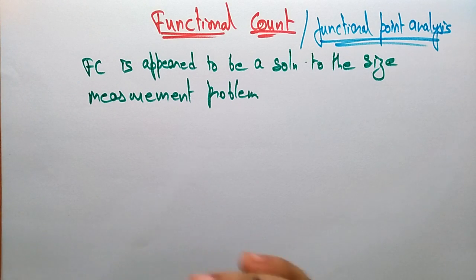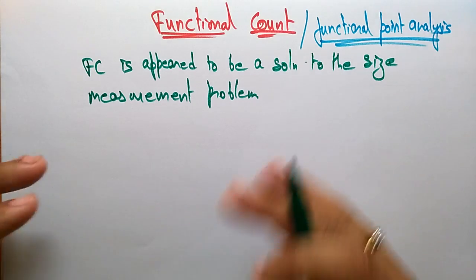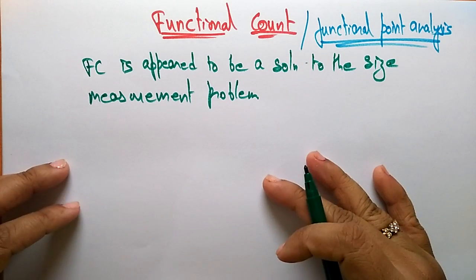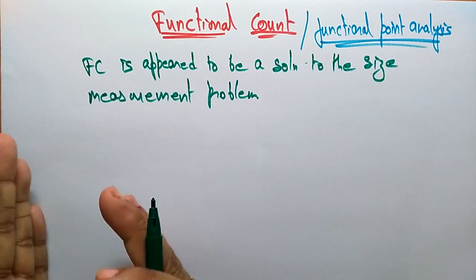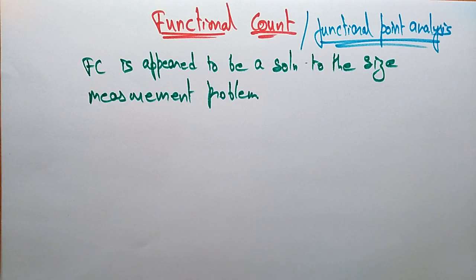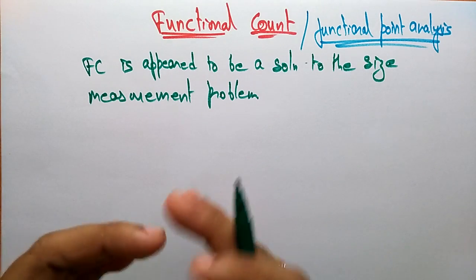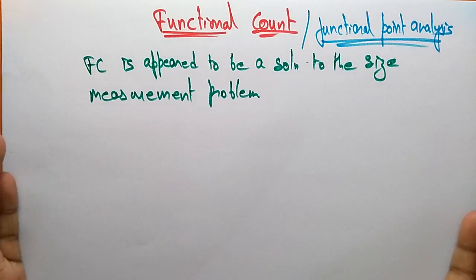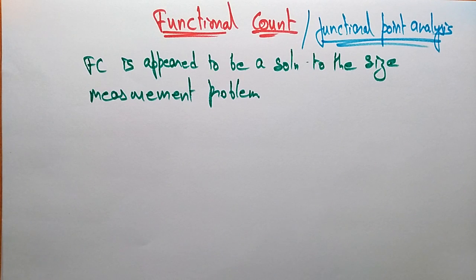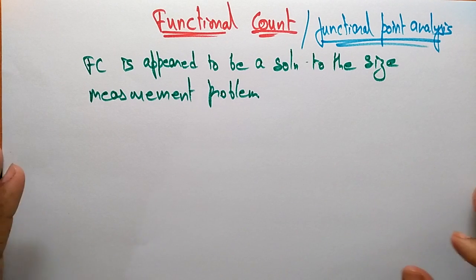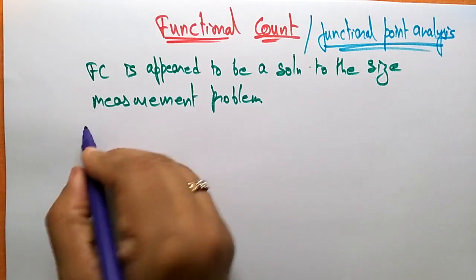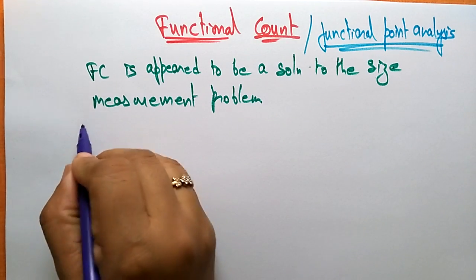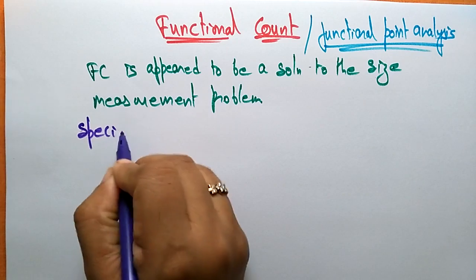This functional count means we are counting the functions that are present in the program — the input functions, output functions, internal functions. Whatever functions are involved in delivering one product, how many functions are going to be undertaken — that we have to calculate. Now let us see the special features of this functional count.